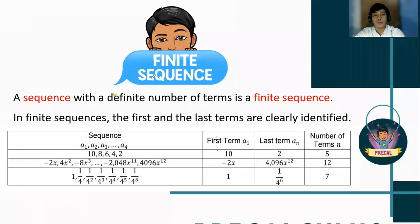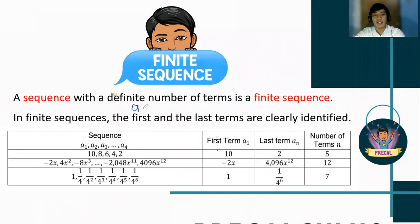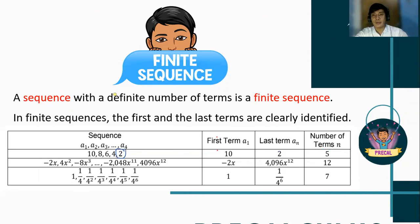One type of sequence is the finite sequence. A sequence with a definite number of terms is known as a finite sequence. It is clearly identified by its first term and its last term. In symbols, the first term is a sub 1 and the last term is a sub n. For example, the sequence 10, 8, 6, 4, 2 is a finite sequence where the first term is 10, the last term is 2, and we have 5 terms. So a sub 5 is 2, which is the nth term of this sequence.